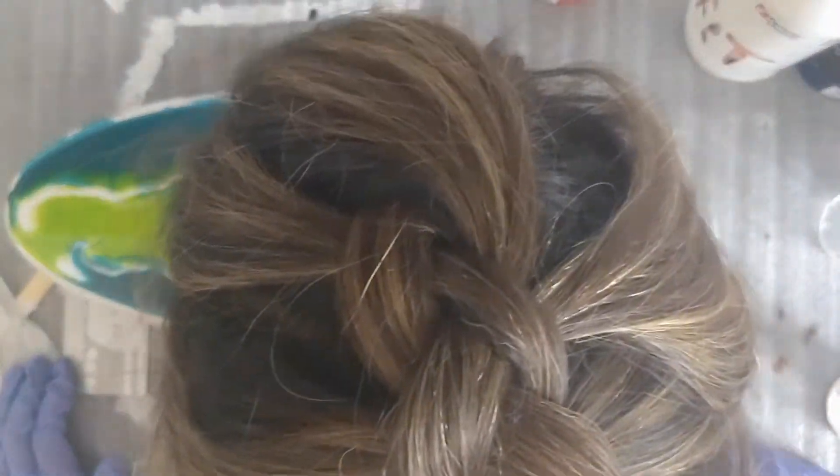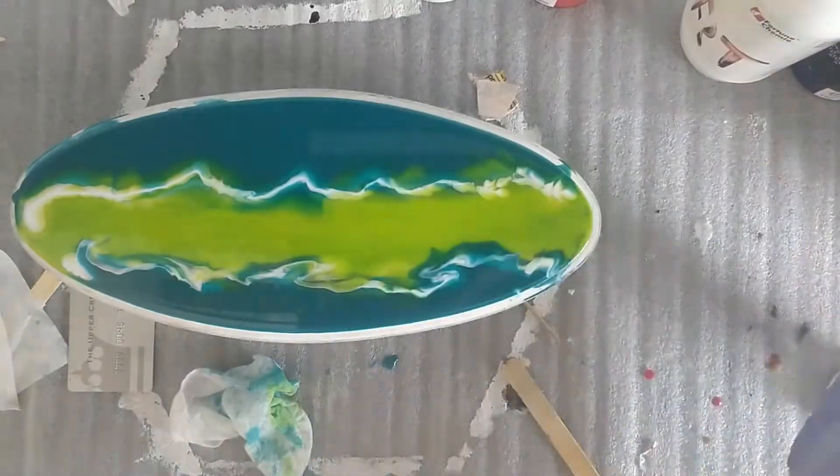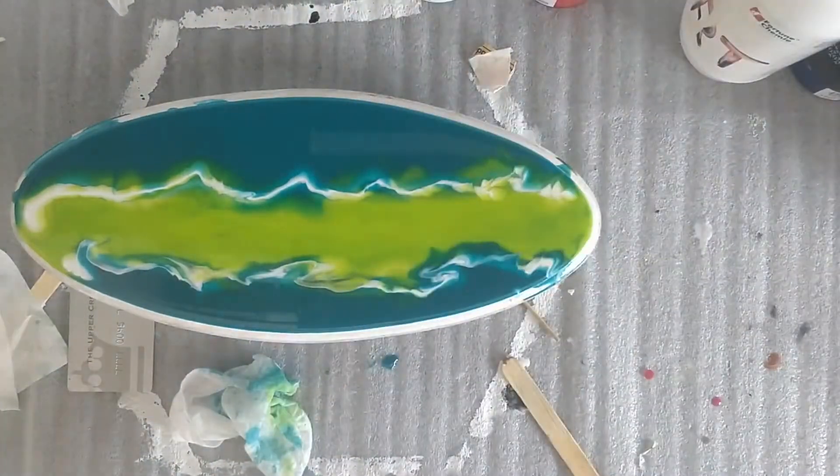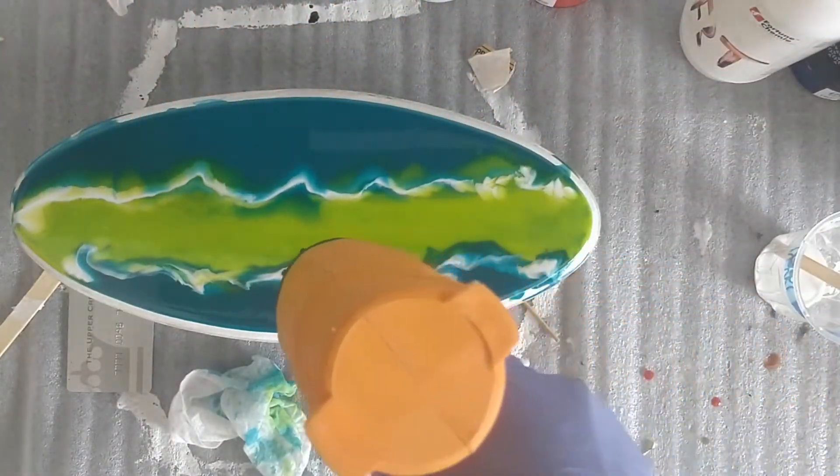You can also use a heat gun on high setting to get the lacing effect like I am doing here. Just keep playing around with it until you are happy with the results. Let it cure for 24 to 48 hours and your resin nameplate is ready.